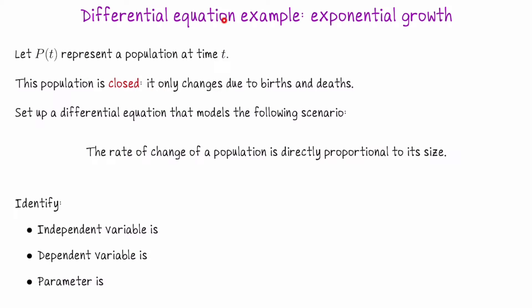In this lesson, we're going to look at a very specific example of a differential equation, and that is the occurrence of exponential growth. Let P represent a population at time t. Units of time could be minutes, days, hours — it doesn't matter. We will assume that the population is closed, which means it only changes due to births and deaths. We do not have immigration or hunting or anything like that.